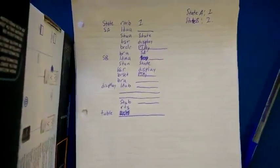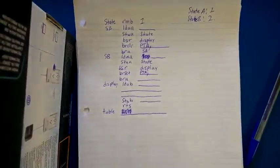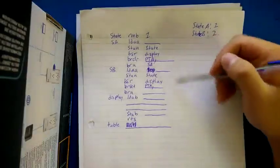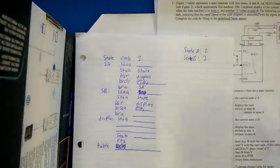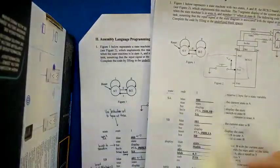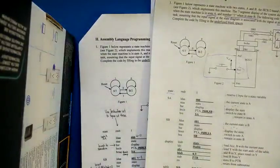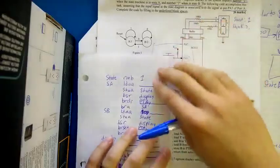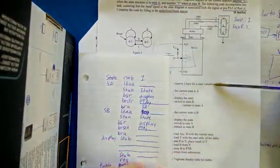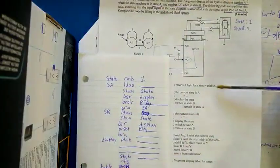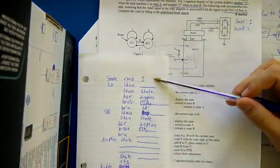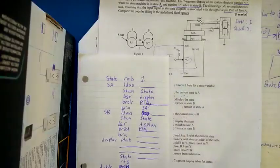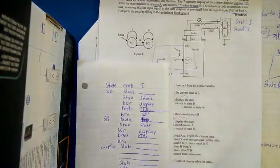Okay guys, so this is the follow-up video and what we're going to do now is just go through the code. So the idea is we have these things here and we have the clues here. The first clue says to reserve one byte for the state variable, okay cool. So on the test we're going to look at this and say we're going to reserve a state — why not reserving a byte for the state variable.